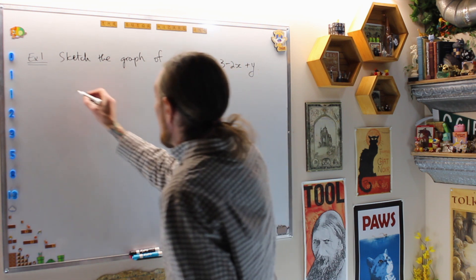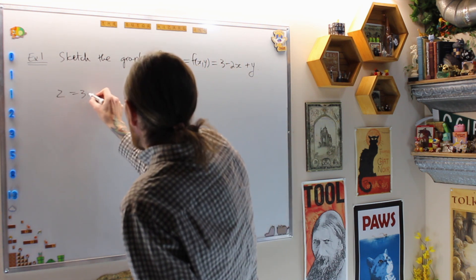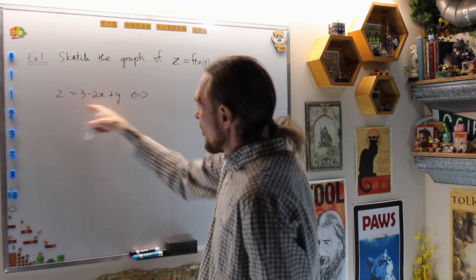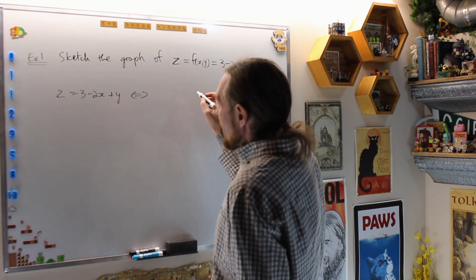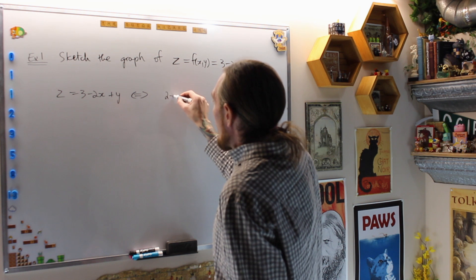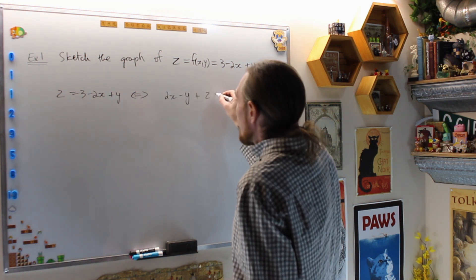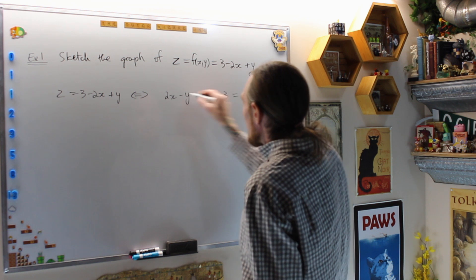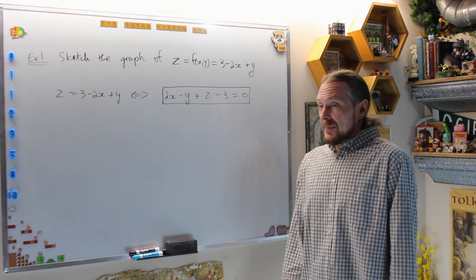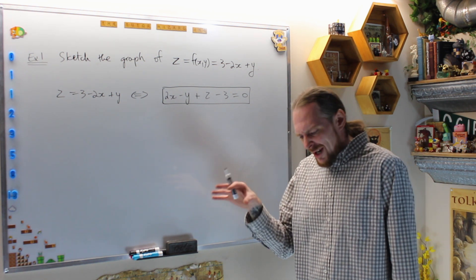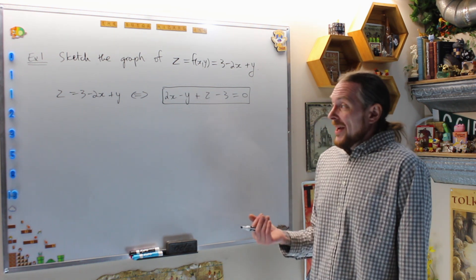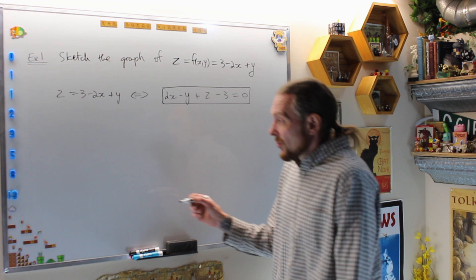z equals 3 minus 2x plus y if and only if, another way we can do this is, this is 2x minus y plus z minus 3 equals 0, which is the general equation of a plane in space. Look at my videos on linear algebra and you can specifically see how to do that.